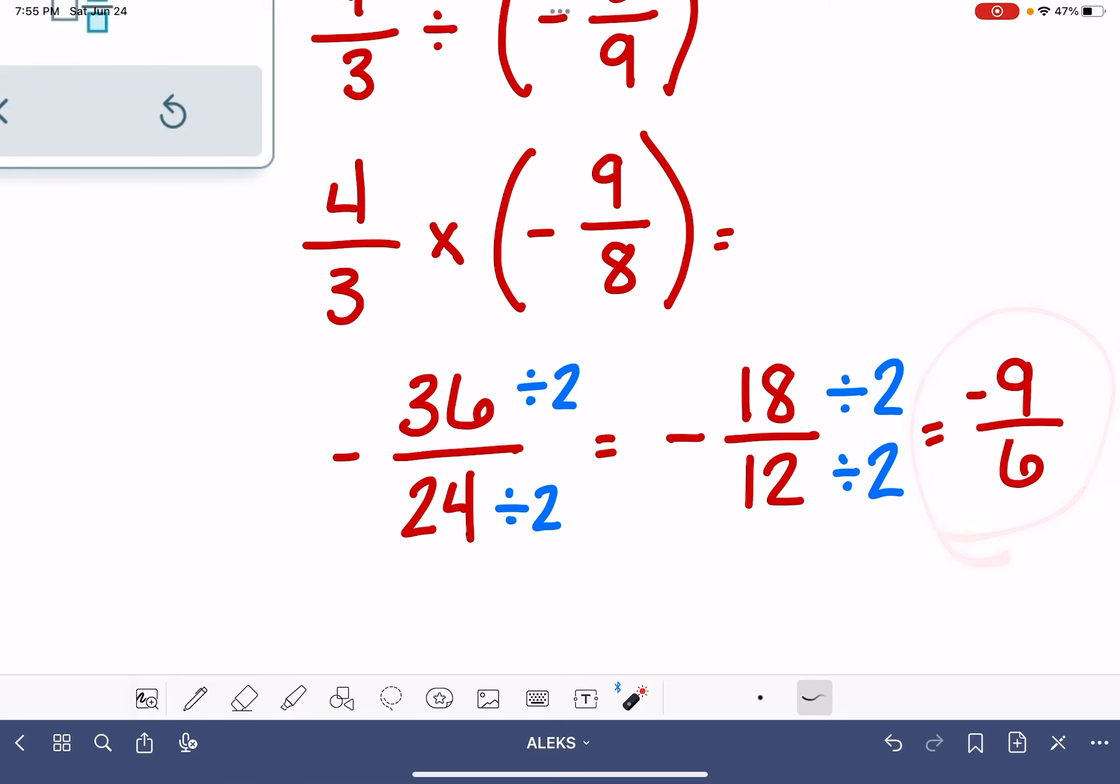Has that been simplified all the way? Nope, because we can divide both of these terms by 3. So we'll make a little note of that. We can divide that by 3. We can divide that by 3. And that's going to give me negative 3/2.